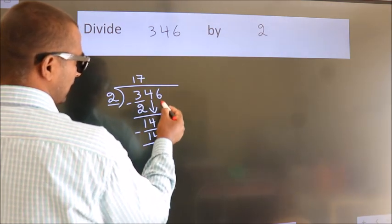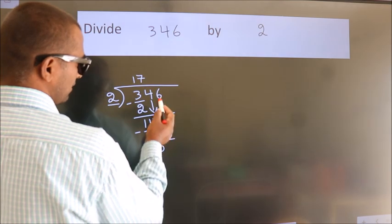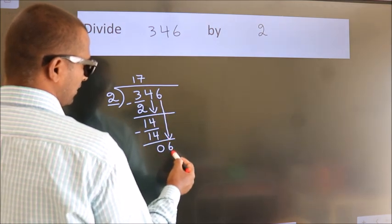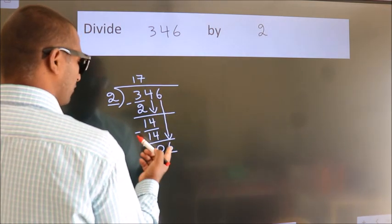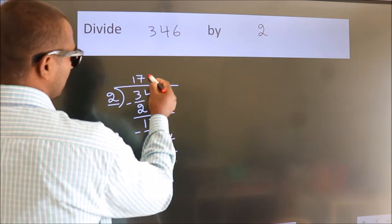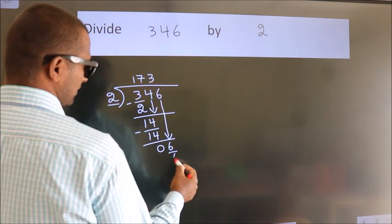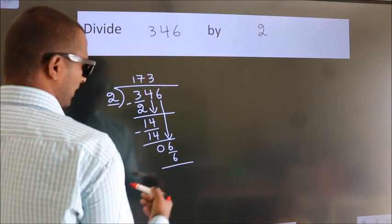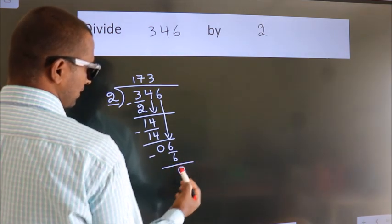After this, bring down the next number. So 6 down, giving us 6. When do we get 6 in the 2 table? 2 times 3 is 6. Now we subtract. We get 0.